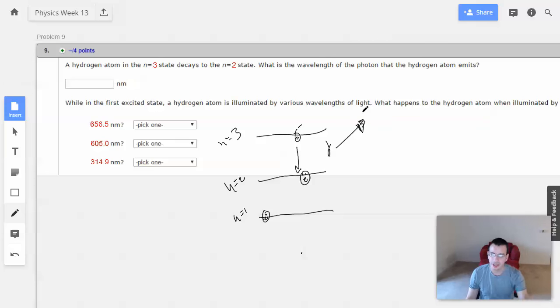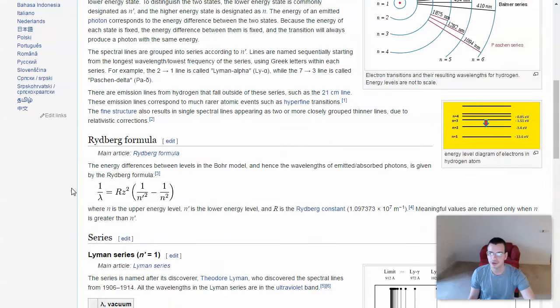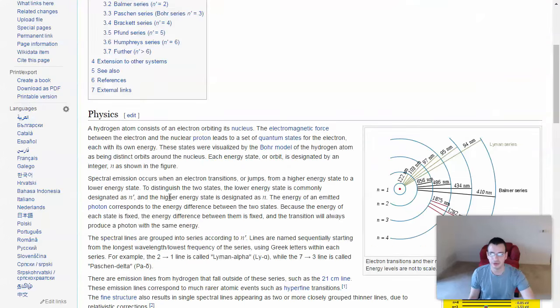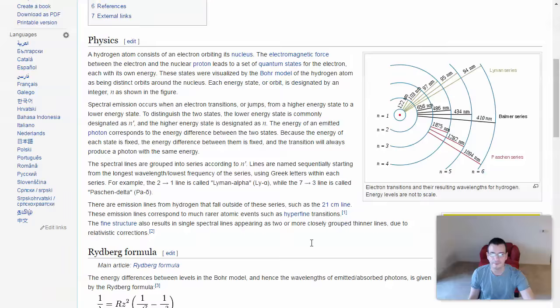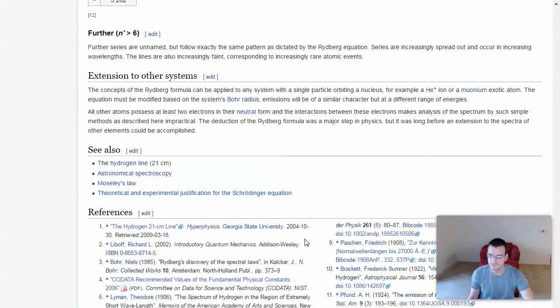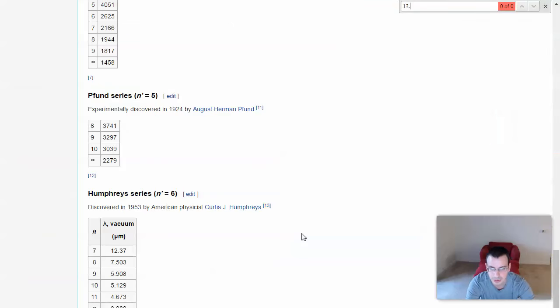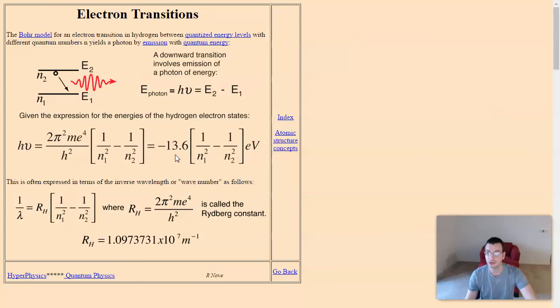So if I find out what the energy at 3 is and the energy at 2, then the difference between those will give me a wavelength. So, where's the formula? Here's the, nope, that's not the formula. Control F, 13.6. No, nothing. Here's what I'm looking for.